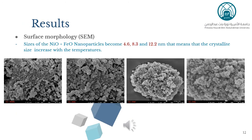SEM images show the morphology of the iron-doped nickel oxide nanoparticles. It is observed that the shape of the particles is nearly spherical and oval with non-homogeneous distribution, and they are in the range of 10 to 30 nanometers, with particle sizes of 4.6, 8.3, and 12.2 nanometers, which means that the particle size increased with the increase of temperature.